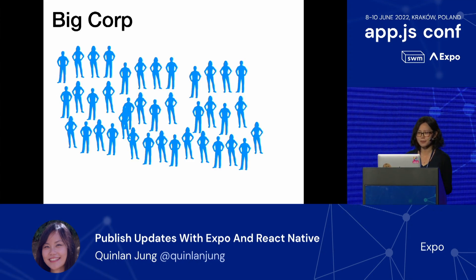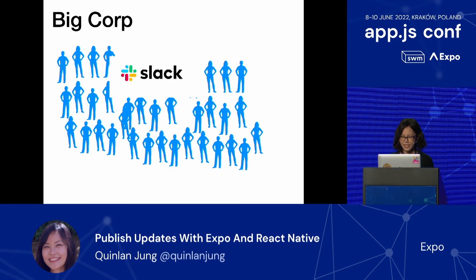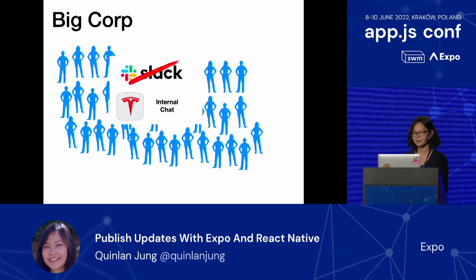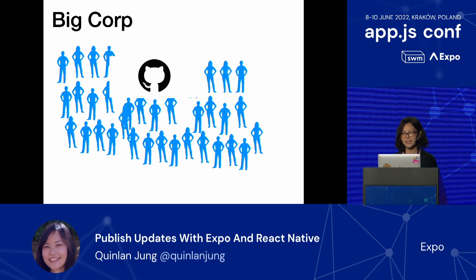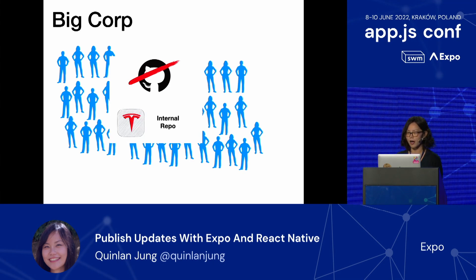But before we talk about all of that, I want to talk about big corporations. These are usually the companies that have thousands and thousands of employees. At big corporations, instead of using messaging applications that we're generally familiar with, like Slack, they'll usually choose to make their own internal chat apps. And instead of using repository services like GitHub, a lot of them will opt to roll their own internal repository services.